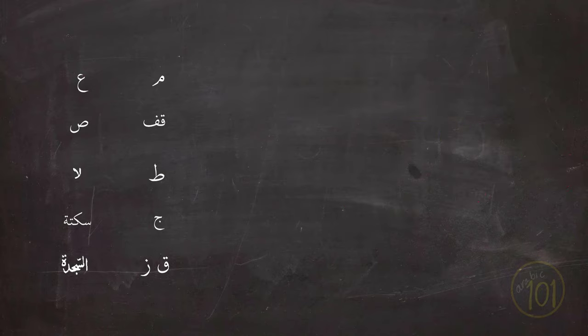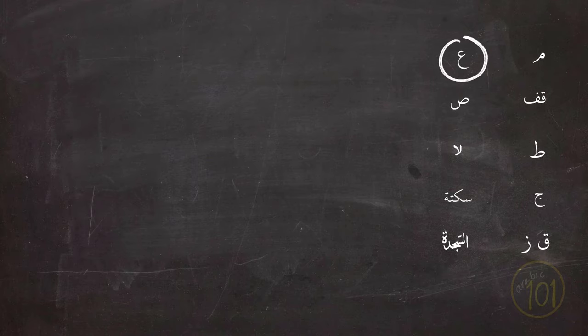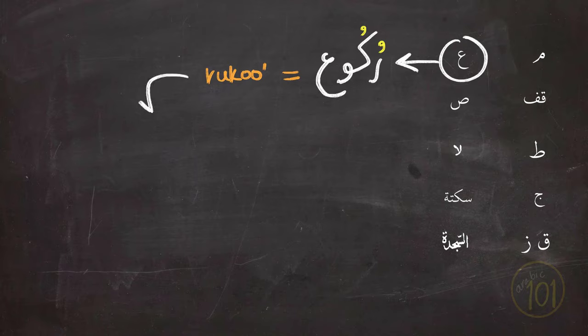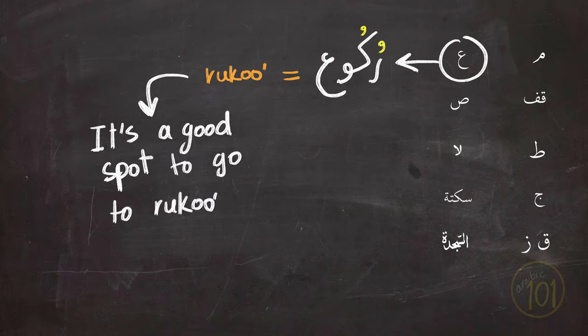Next is the sign of Ayn, and Ayn stands for the word Ruku'a. And it means if you were in prayer, here is a good spot for you to go to Ruku'a, because it is then the ending of the story or the teaching in question. You can certainly stop and go to Ruku'a at other spots as long as you're allowed to, but here is when it makes the most sense.